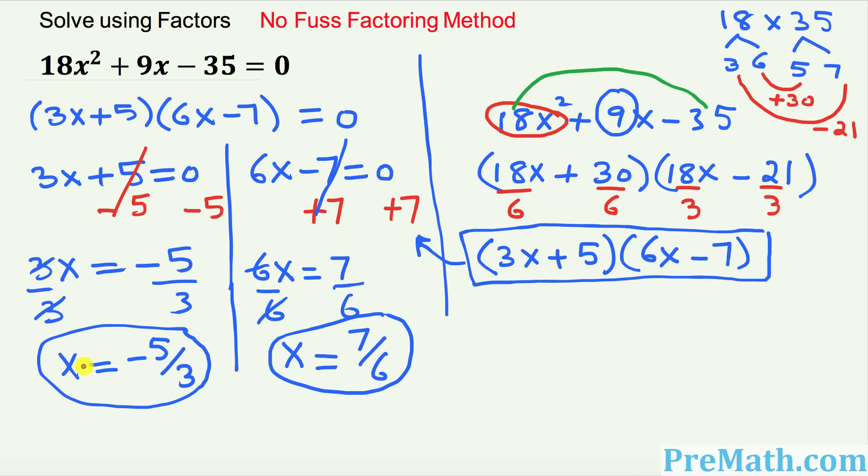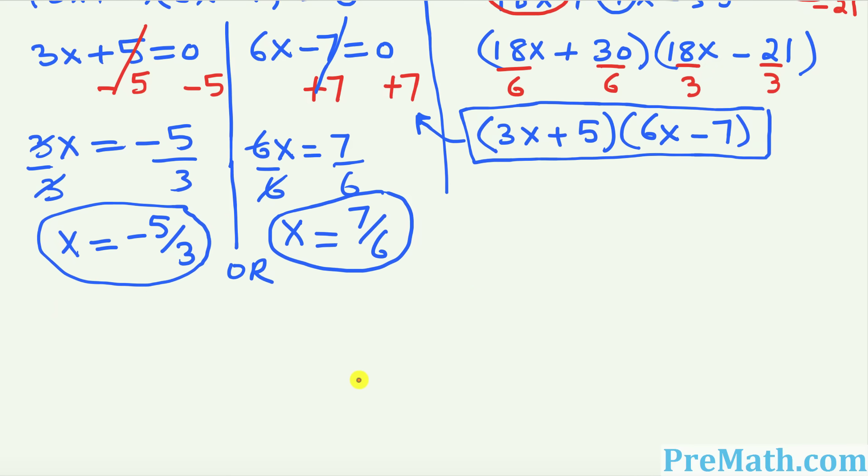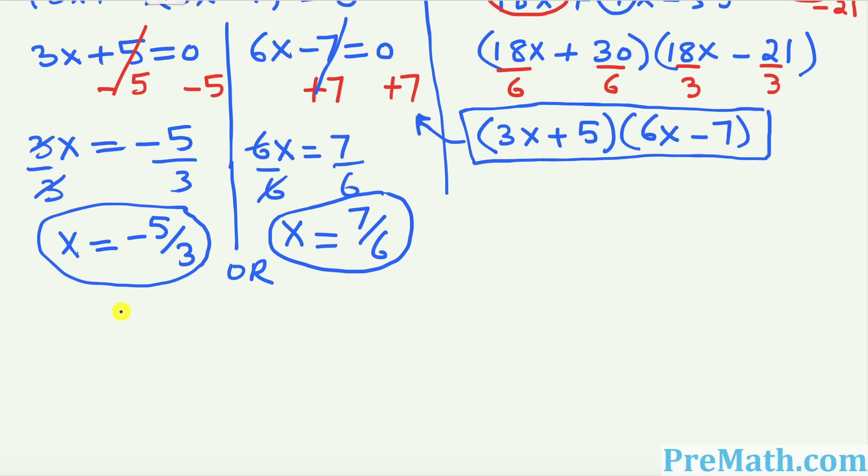So thus our two solutions are either x = -5/3 or x = 7/6. Or we can write a little bit differently. We're going to say our solution set is going to be simply what? -5/3, 7/6 and that is our complete answer. Thanks for watching.